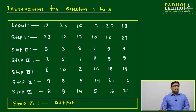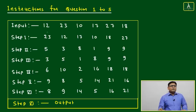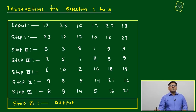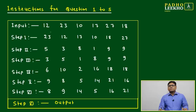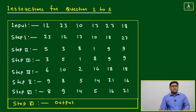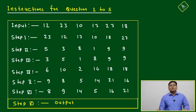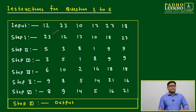For questions 1 to 5, the input is a set of numbers like 12, 23, 10, 17, 27, 18. In Step 1, we are interchanging positions: position 1 with position 2, position 3 with position 4, and position 5 with position 6.